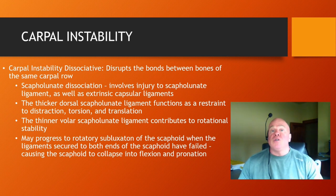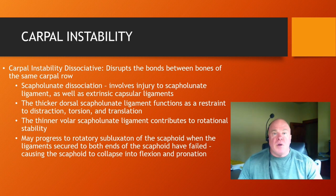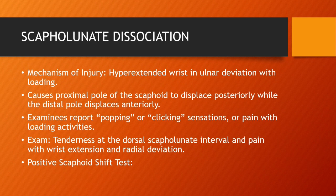The AMA Guides tell us that these misalignments can also be determined by radiographic measurements. With scapholunate dissociation, the typical mechanism of injury involves a hyperextended wrist with ulnar deviation and sudden, unexpected loading — a fall on an outstretched hand, such as slipping off a stair, slipping off a curb, or other unexpected falls onto the hand. This causes the proximal pole of the scaphoid to displace posteriorly while the distal pole displaces anteriorly. Examinees will report popping, clicking, catching, or clunking sensation in the wrist, along with pain and clicking with loading activities.